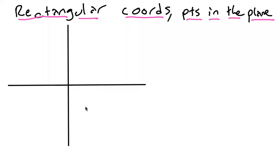Our final video in the set introducing complex numbers is going to be on rectangular coordinates and points in the plane. We're going to be starting to look at the geometry of complex numbers. How do we represent them in different ways?